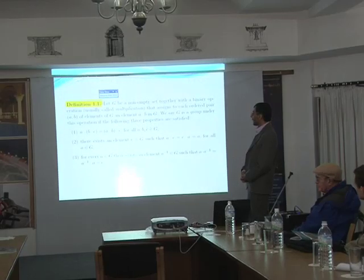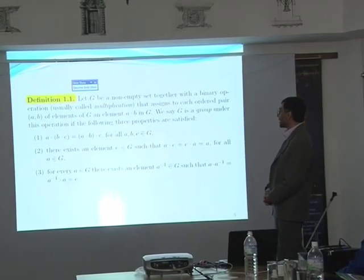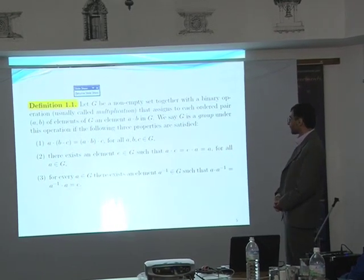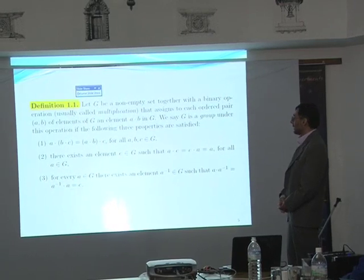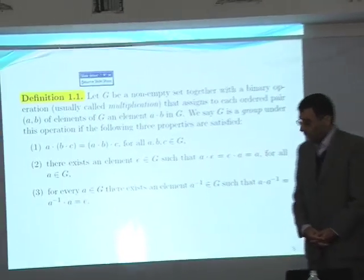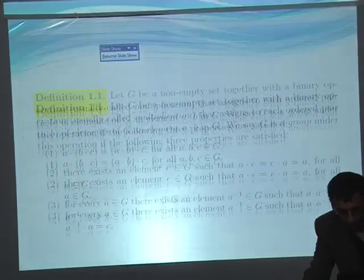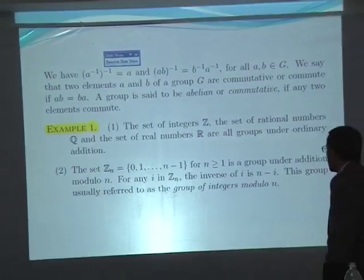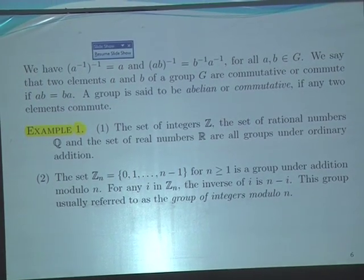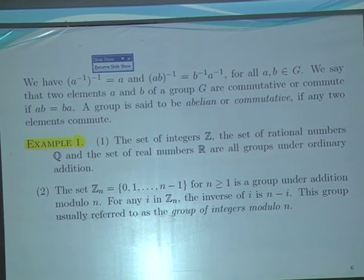A group satisfies the associative law, has an element called identity, and every element has an inverse. I think everybody knows this definition. The usual examples for groups are Z, R, C, and cyclic groups.